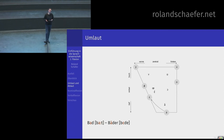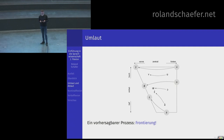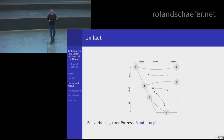Ich habe die Diphthonge weggelassen, die machen es ein bisschen komplizierter – aber das können Sie mal versuchen sich zu überlegen, was beim Umlaut wie Lauf – Läufe genau passiert. Wenn Sie sich das alles angucken: beim Umlaut passiert immer dasselbe, die Zunge geht nach vorne. Gespannte Vokale bleiben gespannte, ungespannte bleiben ungespannte. Ansonsten ist das eine Frontierung. Das heißt aber auch: das ist vorhersagbar. Wenn ich Ihnen einen Vokal gebe und sage, bilden Sie den Umlautvokal dazu, können Sie genau sagen, was der ist.